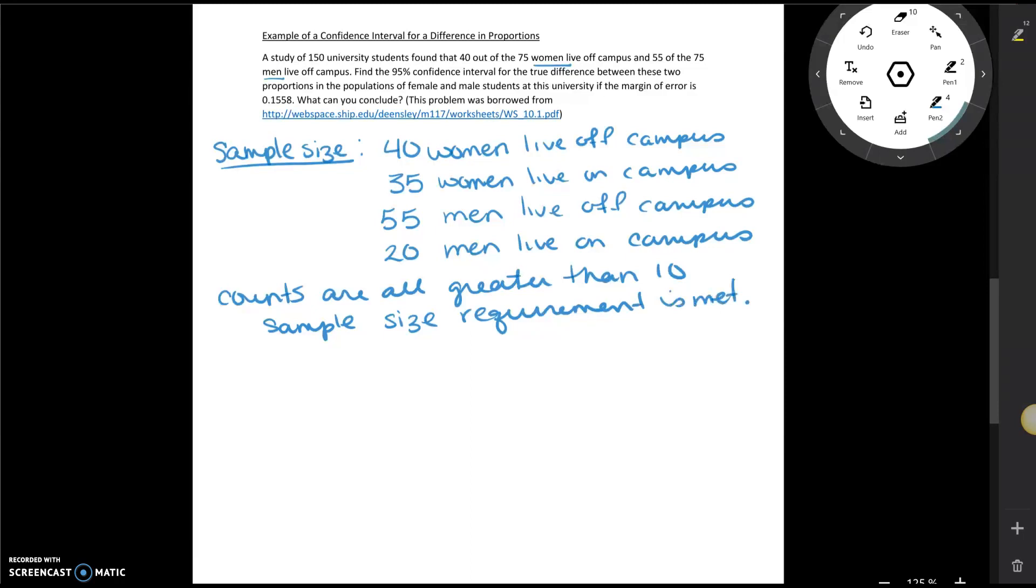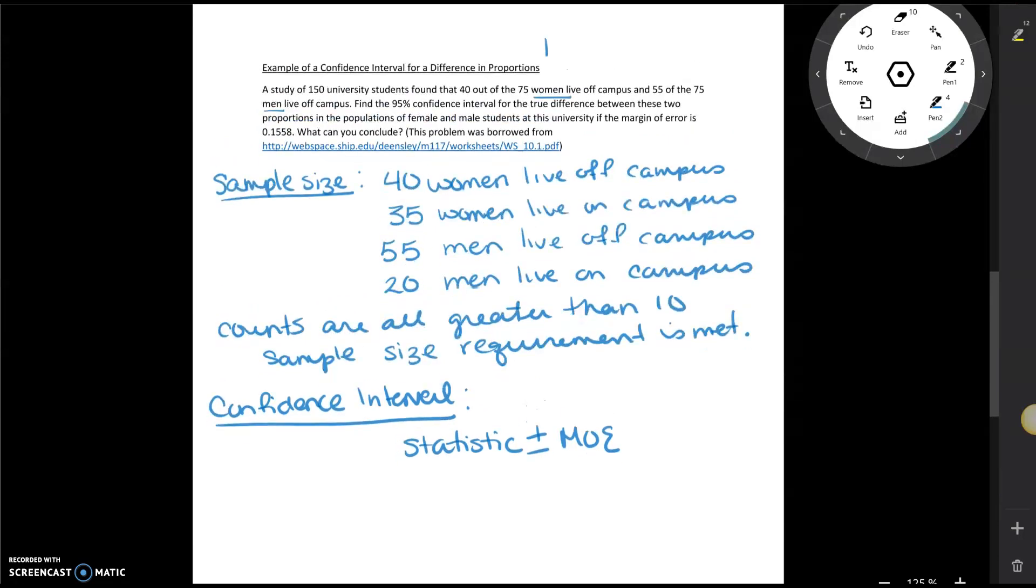Next we're going to calculate our confidence interval. Remember that our confidence interval is always going to be our statistic plus or minus our margin of error. So in this case we have a difference in proportions between men and women. So we could denote that as p-hat for the women minus p-hat for the men.